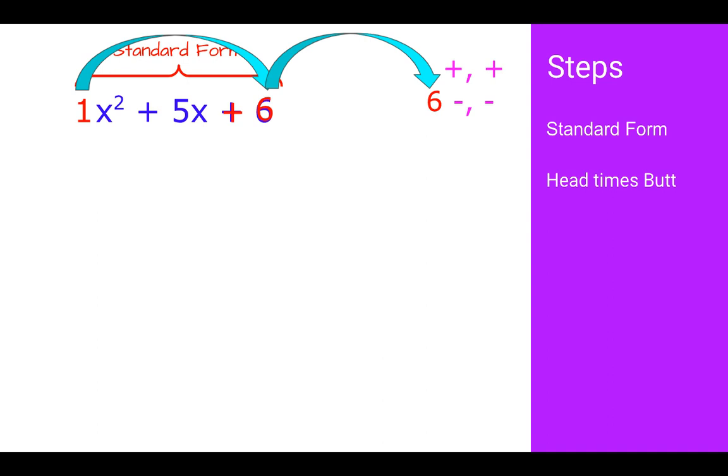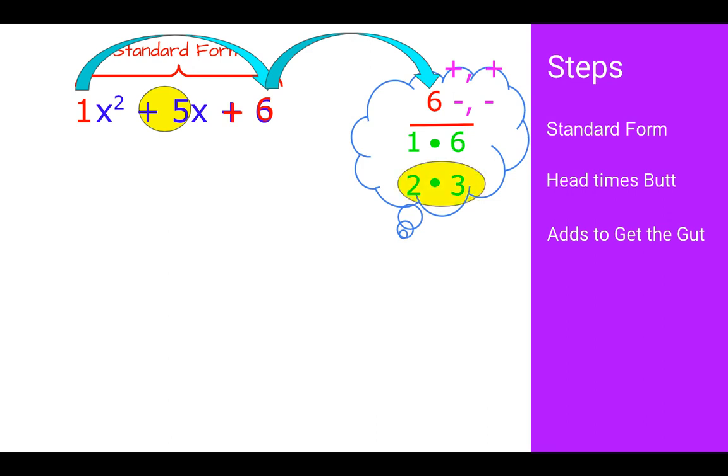If we list the factors of 6, I know to get a positive 6, I can have a plus times a plus or a minus times a minus. So if I start listing the factors of 6, I have 1 times 6 and 2 times 3. I want to add to get the gut. The gut, the middle, is a plus 5x. So in order to get a positive 5 by adding, I know that 1 plus 6 is 7, so that can't work, but 2 plus 3 is 5. So that is going to be my choice.